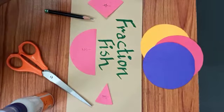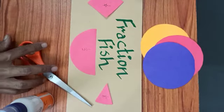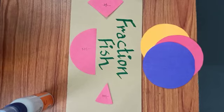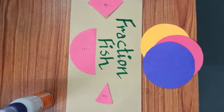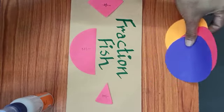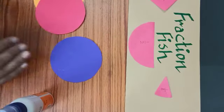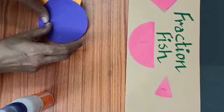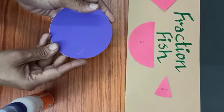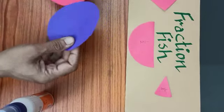Now what is the activity? Basically we have to prepare a fish, and that too out of fractions. So how to do it is an interesting question. Let us first take the three circles, and these should be equal size circles.